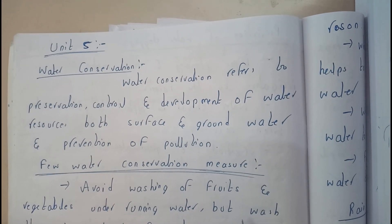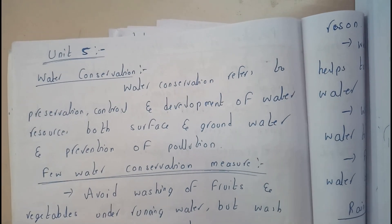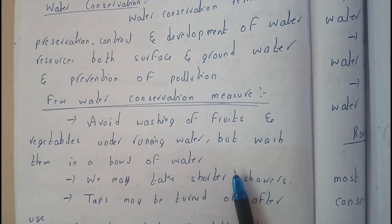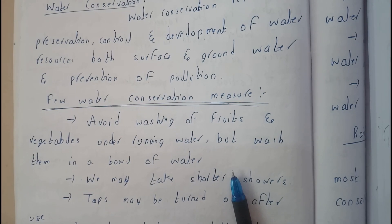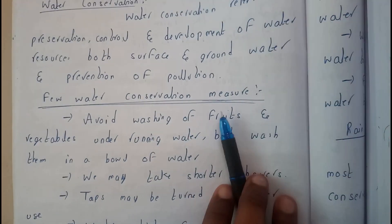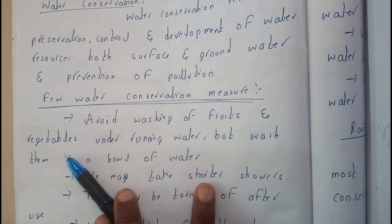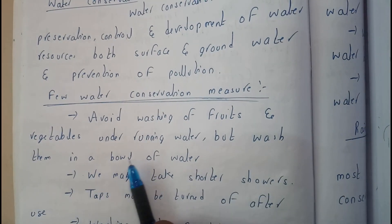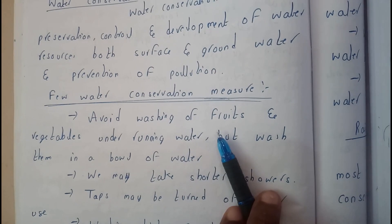Once we are done with the definition, let us go through a few conservation measures that we can follow. Most of us are not following these, to be clear. The first measure: avoid washing fruits and vegetables under running water, but instead wash them in a bowl of water.